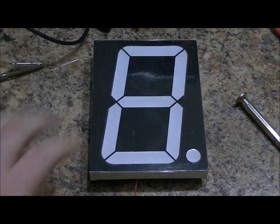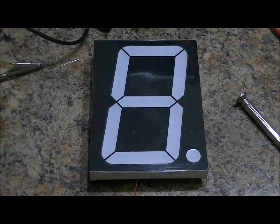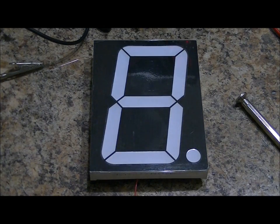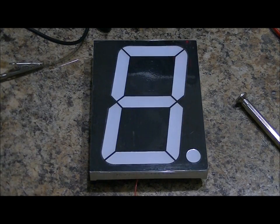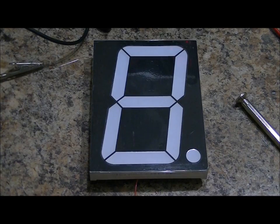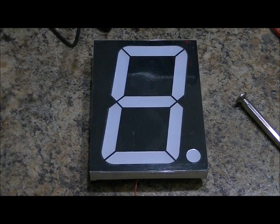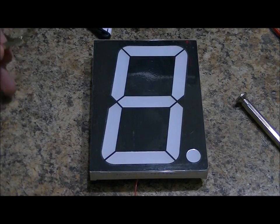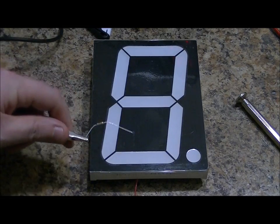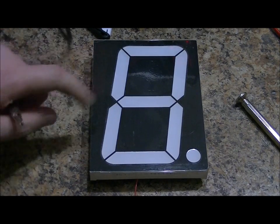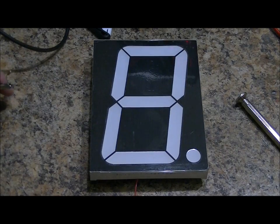Now, these are massive 7-segment displays about the size of my hand. They're very large, and this is a common anode 7-segment display. It takes about 13 volts. The spec says 12 volts, but 12 volts using a 100-ohm current limiting resistor for each of the segments, I find that the segments don't light up as bright as they should.